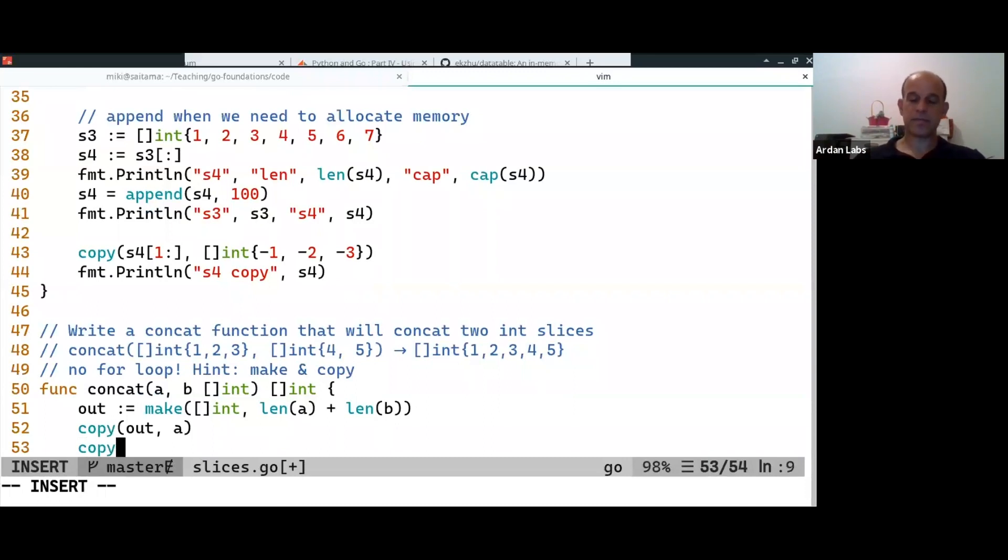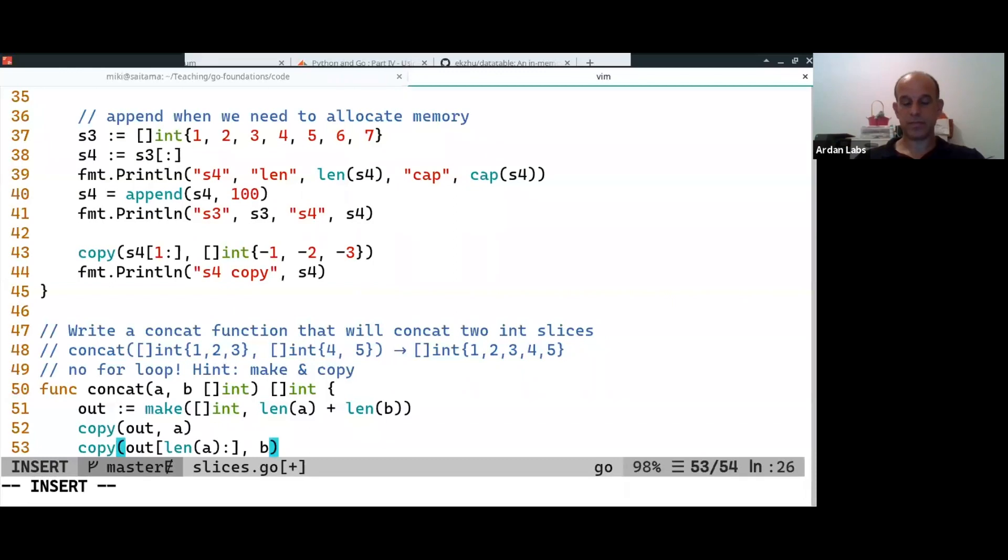And then we're going to copy from len of, to the output from the last var, the last location of A, we're going to copy B. And then we're going to return that.